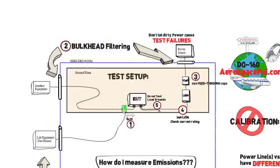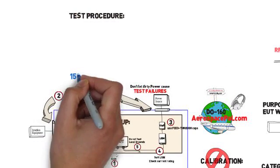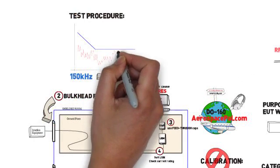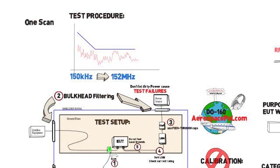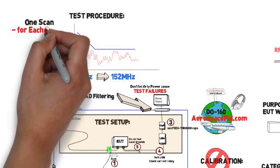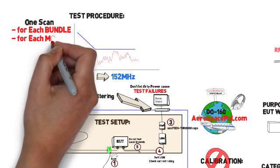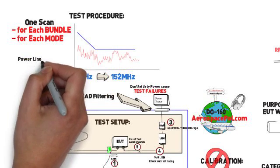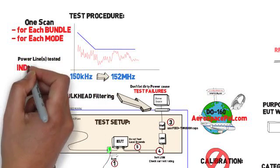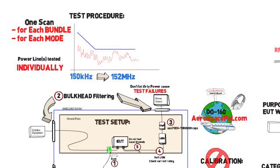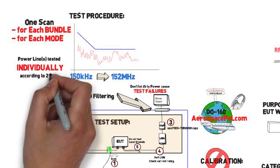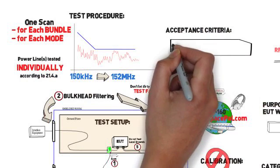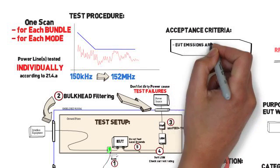Once your unit is in the first operating mode, the test engineer will scan across 150 kilohertz to 152 megahertz. Rescan this range for all bundles as identified on your aircraft manufactured cable and in all operating modes of your EUT. Remember, however, that power lines are tested separate from interface bundles and shall be tested as an individual power line, according to 21.4a. Once each scan is complete, review your EUT emissions and ensure that you're below the limit for your category. And that's it.